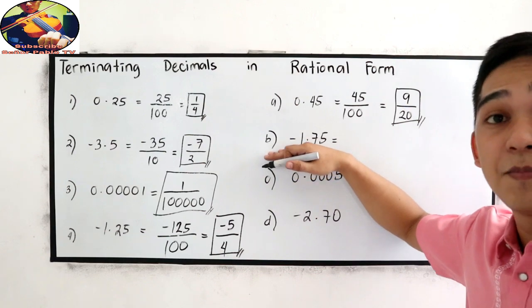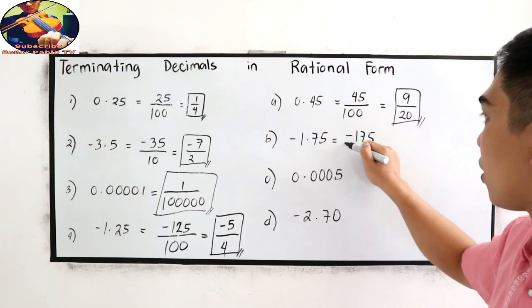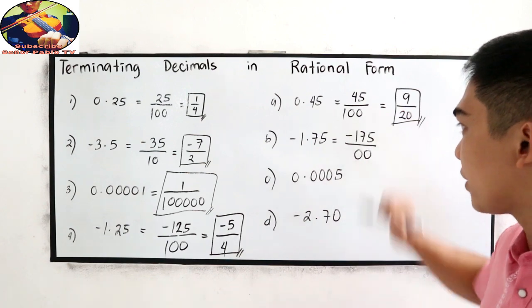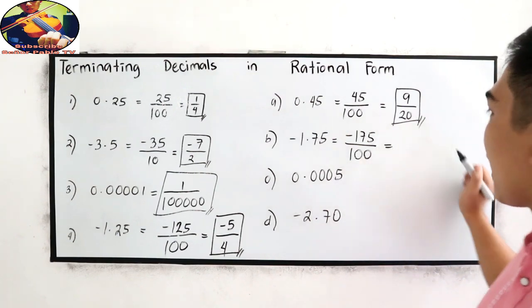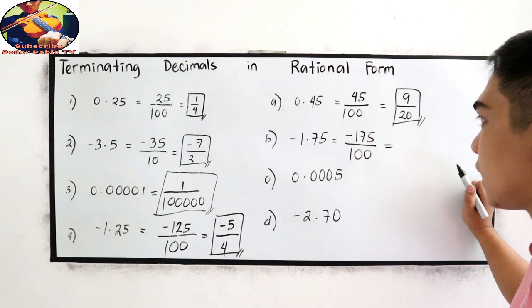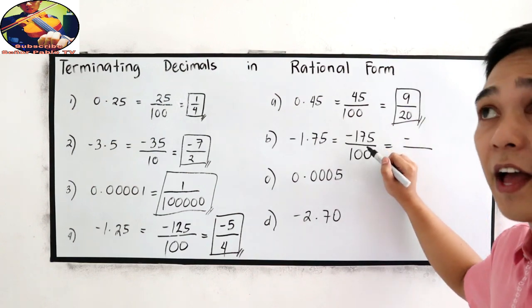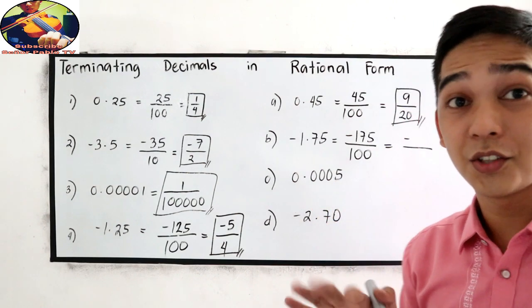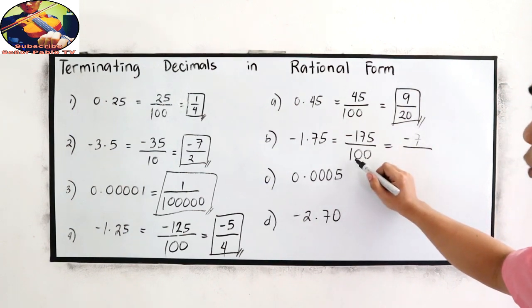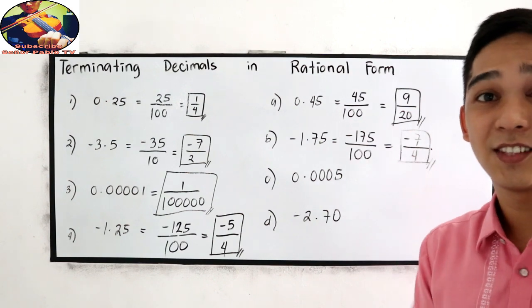Let us check B. Negative 1.75. So this is negative 175 over two decimal places. So two zeros in our denominator, over 100. Again, divisible by 25. So negative 175 divided by 25. So how many 25? There are 7. So negative 7 over 100 divided by 25. So negative 7 over 4. Did you get the same answer?